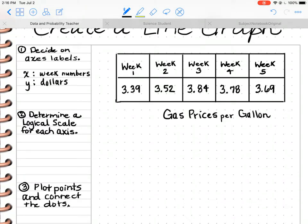Step two: you need to determine a logical scale for each axis. The x-axis is going to be our week numbers, and that's already scaled for me. It's one to five. For the y-axis, I want to show you a little trick. The first thing I want to do is figure out the range. Would you agree that all of these numbers are more than $3, but less than $4?